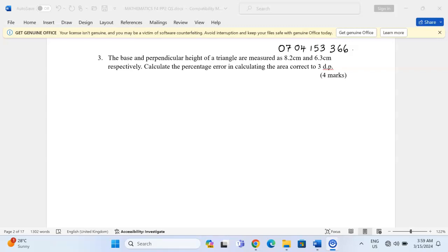Thank you for joining this lesson. We're going to discuss errors and approximations. In number three, we are told that the base and perpendicular height of a triangle are measured as 8.2 centimeters and 6.3 centimeters respectively. Calculate the percentage error in calculating the area correct to three decimal places.